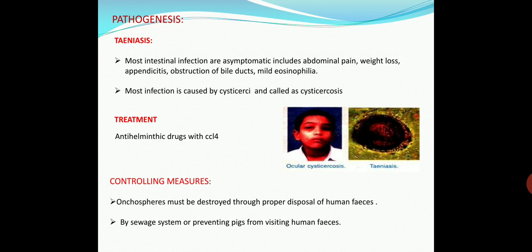Treatment for taeniasis uses anti-helminthic drugs with CCl4 content; these drugs remove only the strobila or body segments. When cysticerci are present, they must be removed by surgical operations. Controlling measures include destruction of developmental stages such as onchospheres and cysticerci. Onchospheres may be destroyed through proper disposal of human feces via sewage systems or by preventing pigs from accessing human feces.